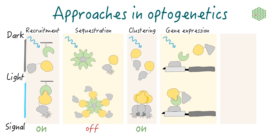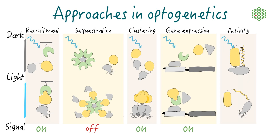For example, the light-induced complementation of a split transcription factor or recruitment of a transcriptional activator can trigger target gene expression. Using a slightly different approach, it is also possible to directly control the enzymatic activity or binding affinity of a target protein. A conformational change in a photosensitive domain, bioengineered in the protein of interest, can expose a hidden signaling motif or relieve the protein from allosteric auto-inhibition.